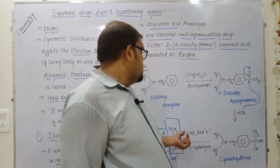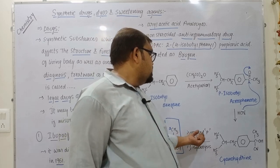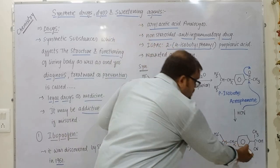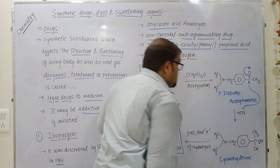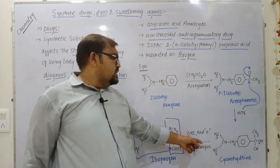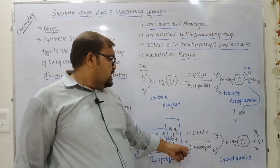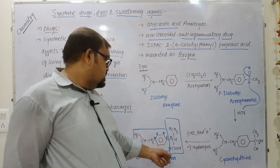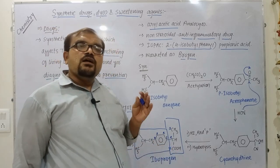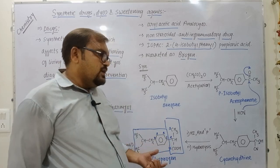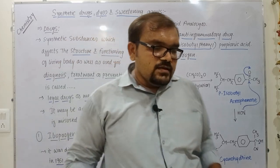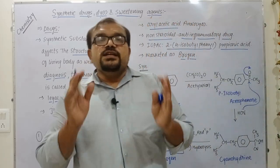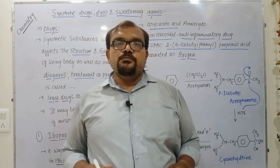After obtaining the cyanohydrin intermediate, we treat it with hydroiodic acid and red phosphorus, which causes removal of oxygen — this is called reduction. So the first step is reduction of cyanohydrin, and the next step is hydrolysis. Hydrolysis of the cyanohydrin nitrile gives acid as the product. So we get our final product, ibuprofen. By remembering these key points and this synthesis, we can easily memorize this important drug.